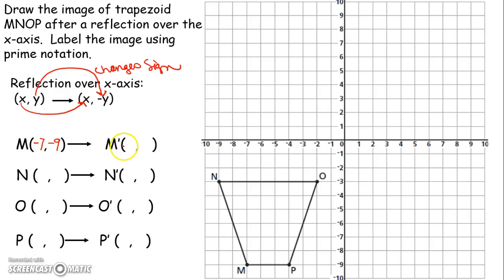Negative 7, negative 9. Again, x coordinate will stay the same. So if it was negative 7, it's still negative 7. The y coordinate changes sign. So if it had been a negative 9, you change that to a positive 9. And there we go. That point right there will be M prime. So we label that M prime. That's what it means with prime notation. How far is M below the x-axis? Here's our line of symmetry, that x-axis. How far below the x-axis was M? Well, it was 9 units below. So how far above will it be? 9 units above.